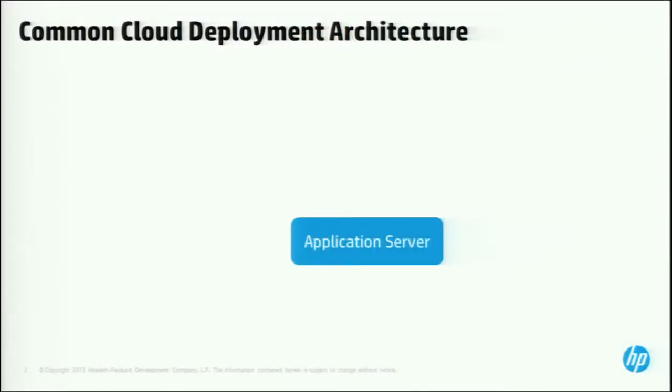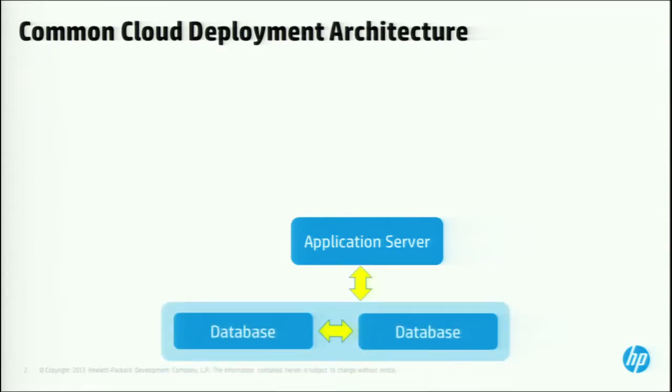A common deployment architecture in public cloud obviously always begins with an application server. There's something that your developers are doing that brings unique value to the market — it's the reason you got into the business. If you're going to deploy your applications in the cloud, you want a back-end data store with some level of high availability, mirroring, and redundancy for a consistent experience.